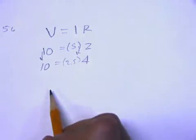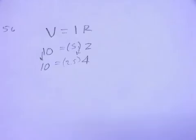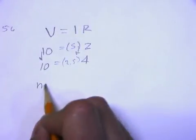So the current went from 5 down to 2.5, and 56 asks, what effect does it have? Well, half the current.